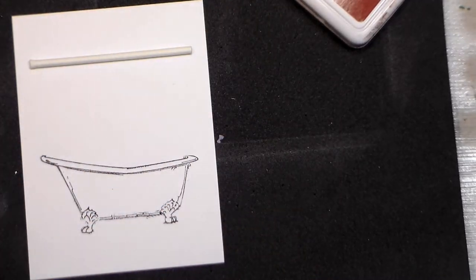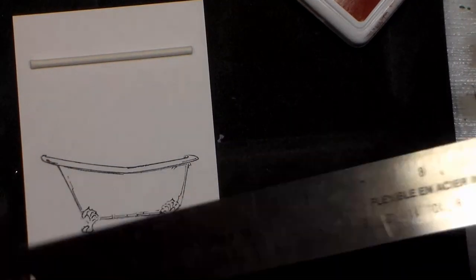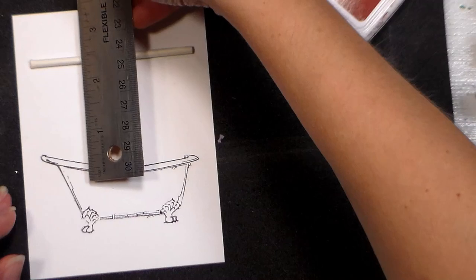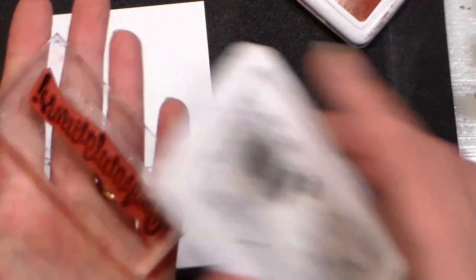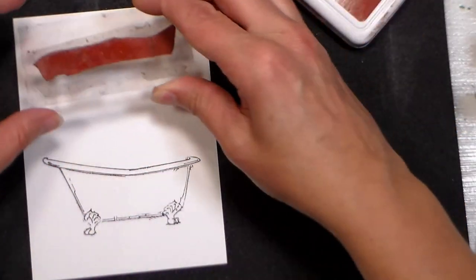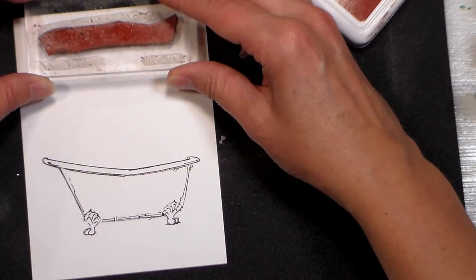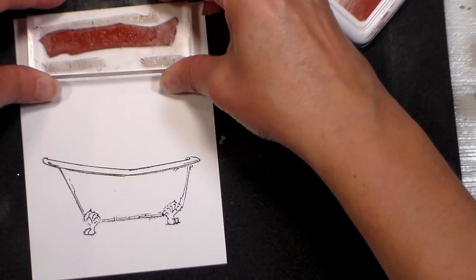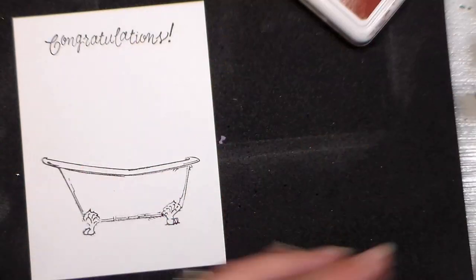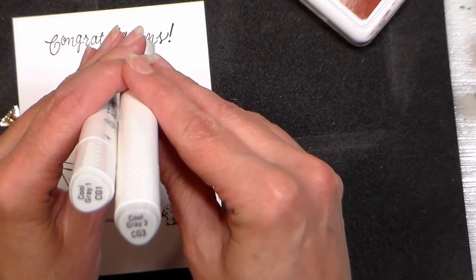So now I'm trying to get an idea for about how high my shower curtain is gonna go, so I figured I'm gonna want it about two and a half by three and a half, and it also gave me an idea of where I could stamp the congratulations, and that's gonna go right at the top of my card. So it's a good idea to lay your elements out if you're not sure how they're going to fit, so you don't have to rework it later.